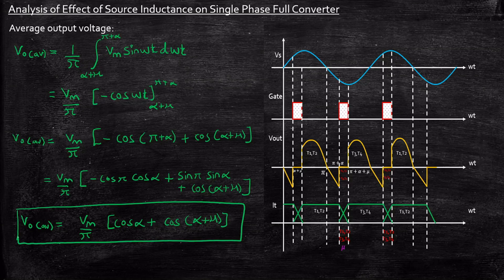...is nothing but Vm by pi times [cos(alpha) + cos(alpha + mu)]. So this is the average output voltage expression with the presence of source inductance on a single phase full converter circuit. But if you carefully observe, this expression does not have the term Ls associated with it. Ls is the source inductance. There are cases where they will give you the source inductance and ask you to find the average output voltage, so in that case you need to derive Vout average in terms of Ls.